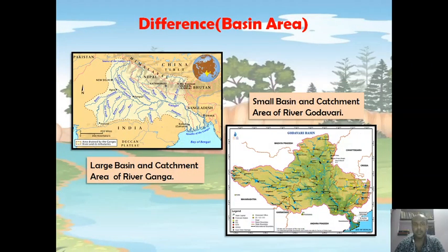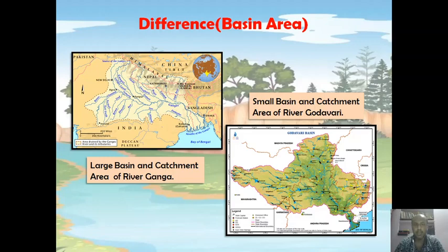First, difference on the basis of basin area. The North Indian rivers or the Himalayan rivers have large basin area, whereas the Peninsular rivers have small basin area. You can see in this diagram that river Ganga has a large basin and catchment area in comparison to river Godavari, because Ganga has a large number of tributaries, whereas Godavari has a small number of tributaries.